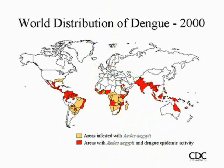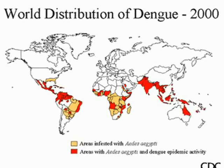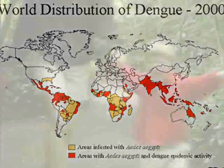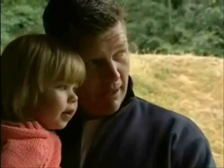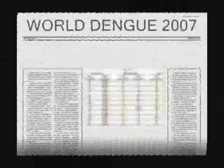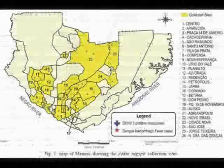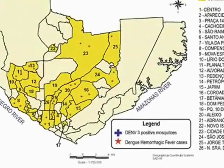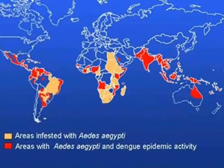Philippine haemorrhagic fever was first reported in 1953. In 1958, haemorrhagic fever became a notifiable disease in the country and was later reclassified as dengue haemorrhagic fever. It is an infection spread by mosquitoes which causes a severe flu-like illness and can lead to potentially lethal complications. In 2007 alone, there were more than 890,000 reported cases of dengue in the Americas, of which 286,000 cases were dengue haemorrhagic fever. Southeast Asia and the Western Pacific are the most seriously affected.